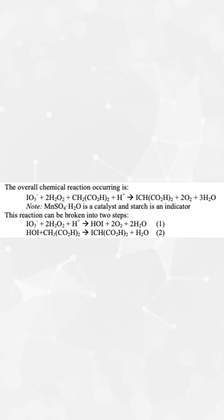...and malonic acid, catalyzed by manganese sulfate with starch as an indicator, demonstrates an oscillating chemical process. It occurs in two main steps: iodate reacts with hydrogen peroxide to form hypoiodous acid (HOI), which then reacts with malonic acid to...